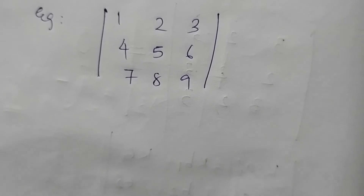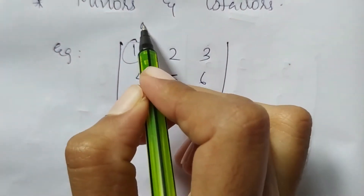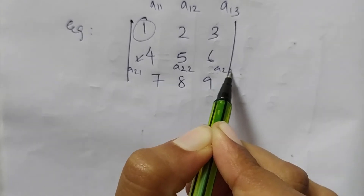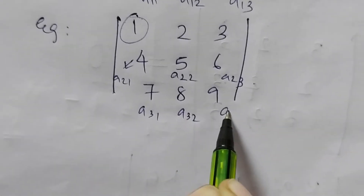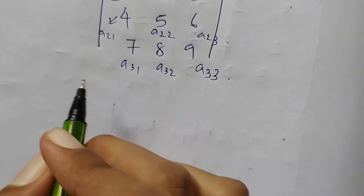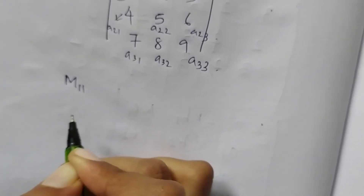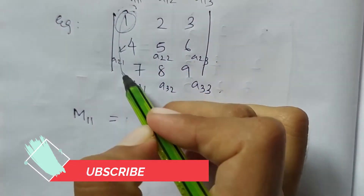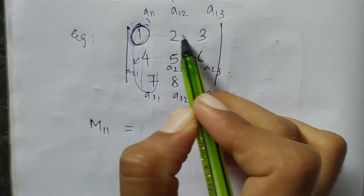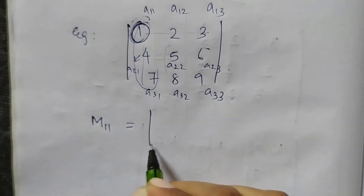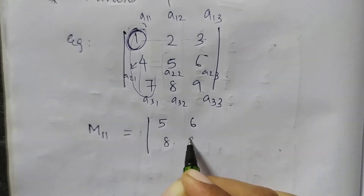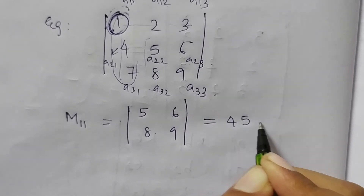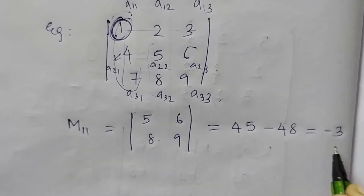The elements are A11, A12, A13, A21, A22, A23, A31, A32, A33. The minor M11 is found by deleting the first row and first column, leaving elements 5, 6, 8, 9. The determinant of this gives 9 times 5 minus 6 times 8, which is 45 minus 48, equal to minus 3. That is the minor M11.